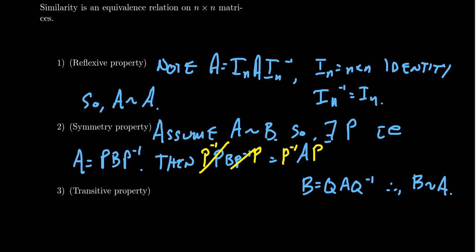Notice what we have here: P inverse times P, B, P inverse times P — that's going to equal P inverse A P. So continuing down this vein, we see that B is equal to P inverse A P.